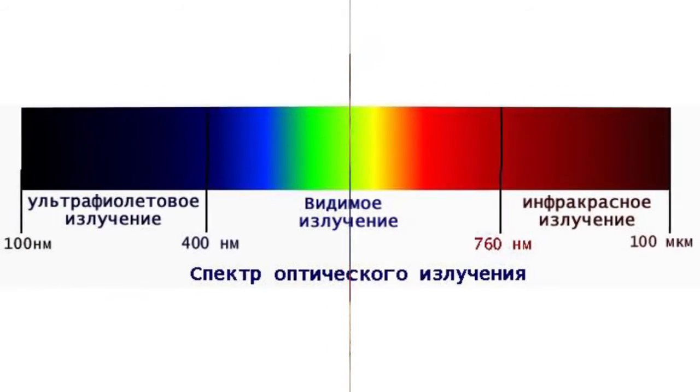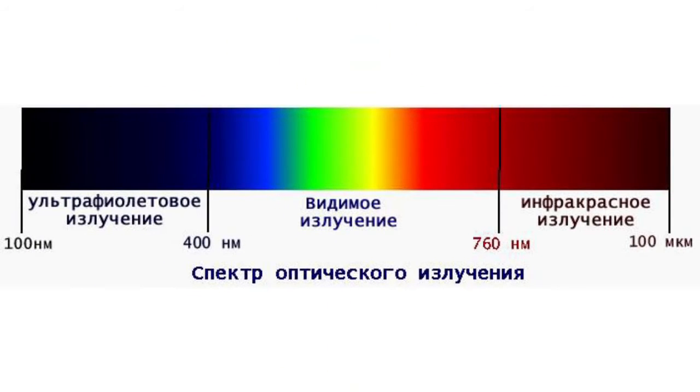Ultraviolet rays are invisible electromagnetic radiation, placed in a spectrum area between the visible spectrum and Röntgen radiation. The wavelength of UV radiation lies in a range of 100 to 400 nm.